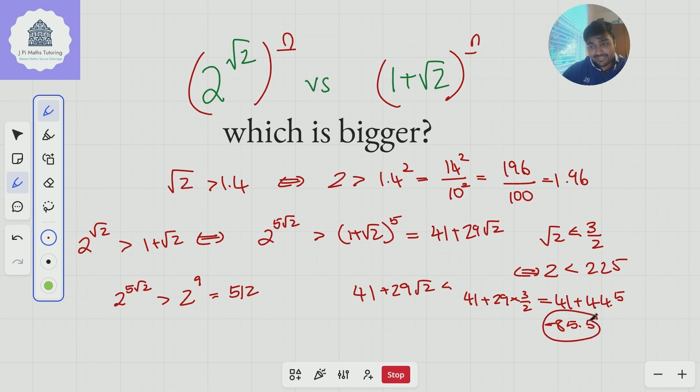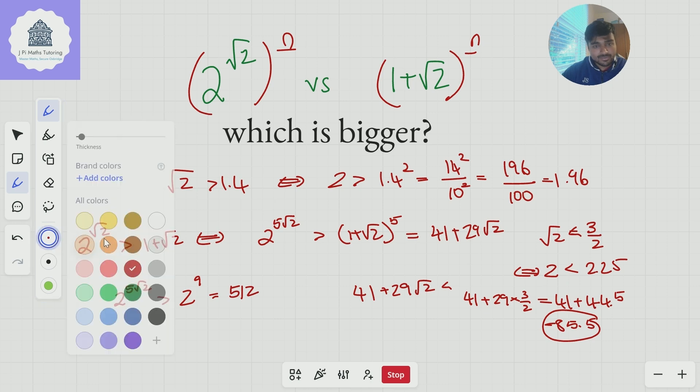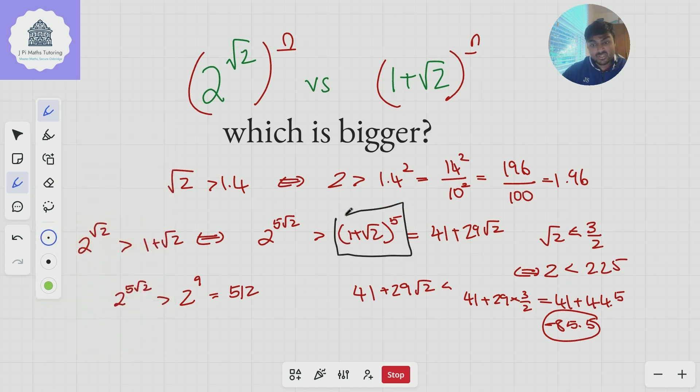But the idea here is that thing there is less than 85.5. So I've kind of made this a bit messy here. The idea is this number here we've just shown is less than 85.5. And this number here is bigger than 512. And so for sure this thing here must be bigger than this thing here. And thus 2 to the power of root 2 is bigger than 1 plus root 2.